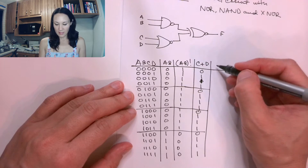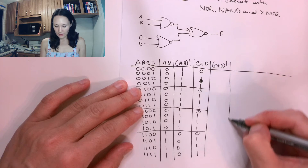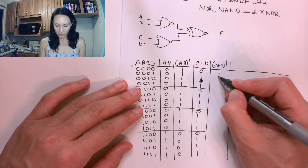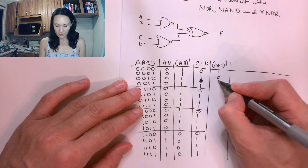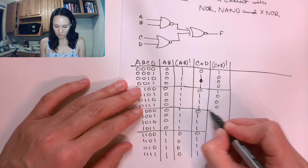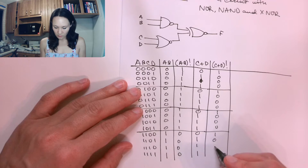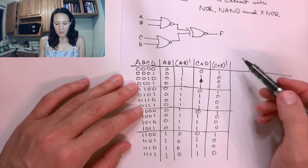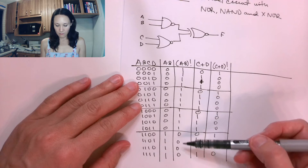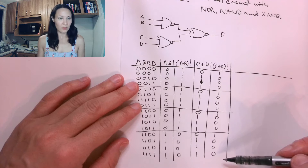To NOR that, I'm just going to take this C OR D column and NOT it. So wherever I see a 0, I'm going to put a 1. That gives me: 1, 0, 1, 0, 0, 0, 0, 0, 1, 0, 0, 0, 1, 0, 0, 0. So now I have the column for A NAND B and the column for C NOR D.